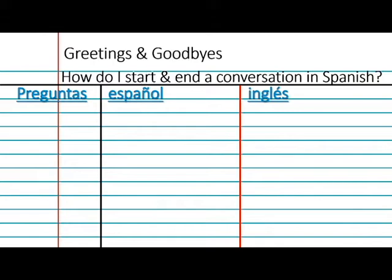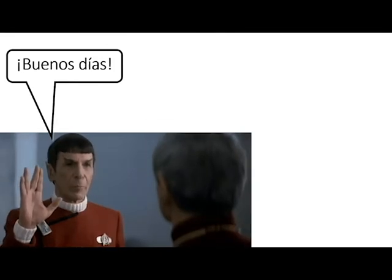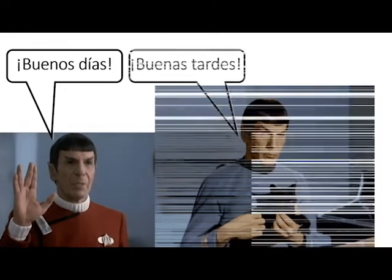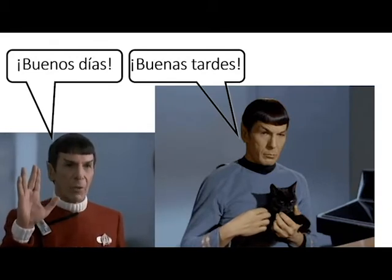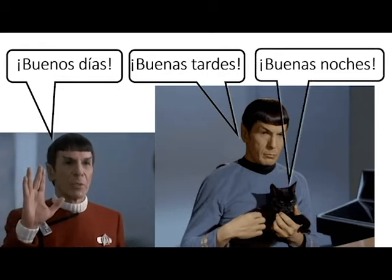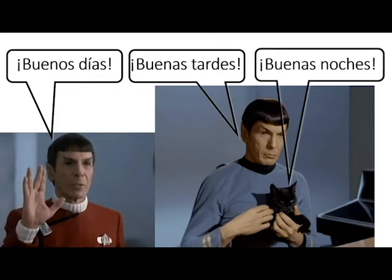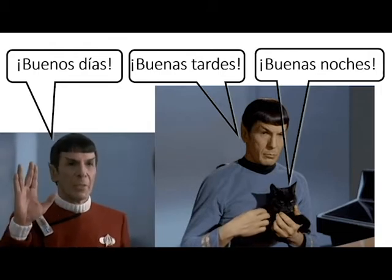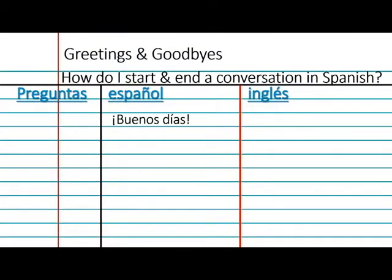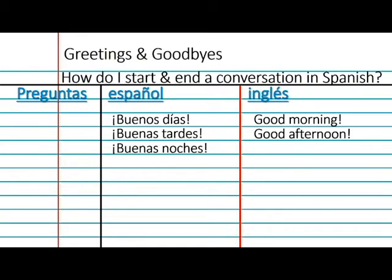Let's try this out. Maybe I'll show you this phrase: buenos días. Spock's telling us — good morning. And then he tells us buenas tardes, which means good afternoon. And then his kitty says buenas noches, which means good night or good evening. So you're going to put that vocabulary down in your notes columns. You'll write buenos días for the Spanish section and good morning in the English section, then buenas tardes and good afternoon, then buenas noches and good night or good evening. That's how you'll keep your notes — nice and easy to study.